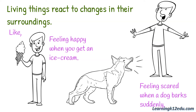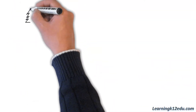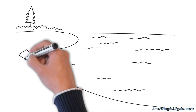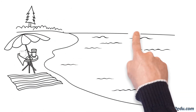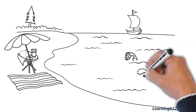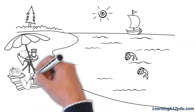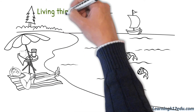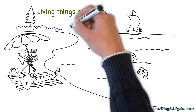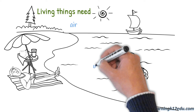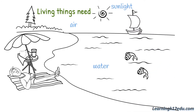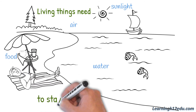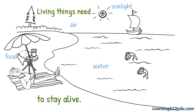Living things need air, water, sunlight, and food to stay alive.